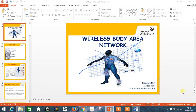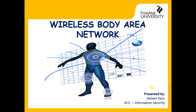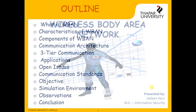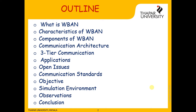Wireless Body Area Network. The outline of this work covers: Wireless Body Area Networks, its characteristics, components, communication architecture, three-tier communication, applications, open research issues, communication standards, the objective of my work, simulation environment, observations, and conclusion.